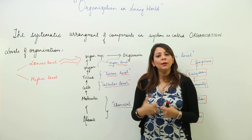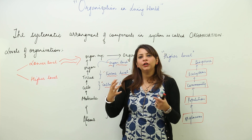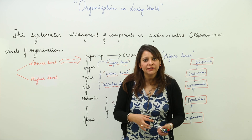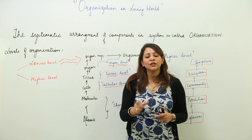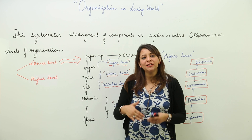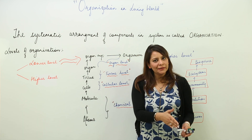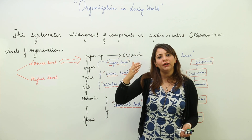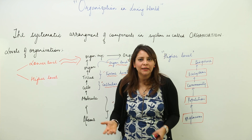Likewise, in the human body, different systems are present, different organs are present. Organs are made up of tissues, tissues contain cells, and cells also contain further smaller units. So a smaller unit is directly or indirectly involved in the functioning of the human body. In this chapter, we'll start with the smallest unit and go ahead to see what bigger unit it forms.